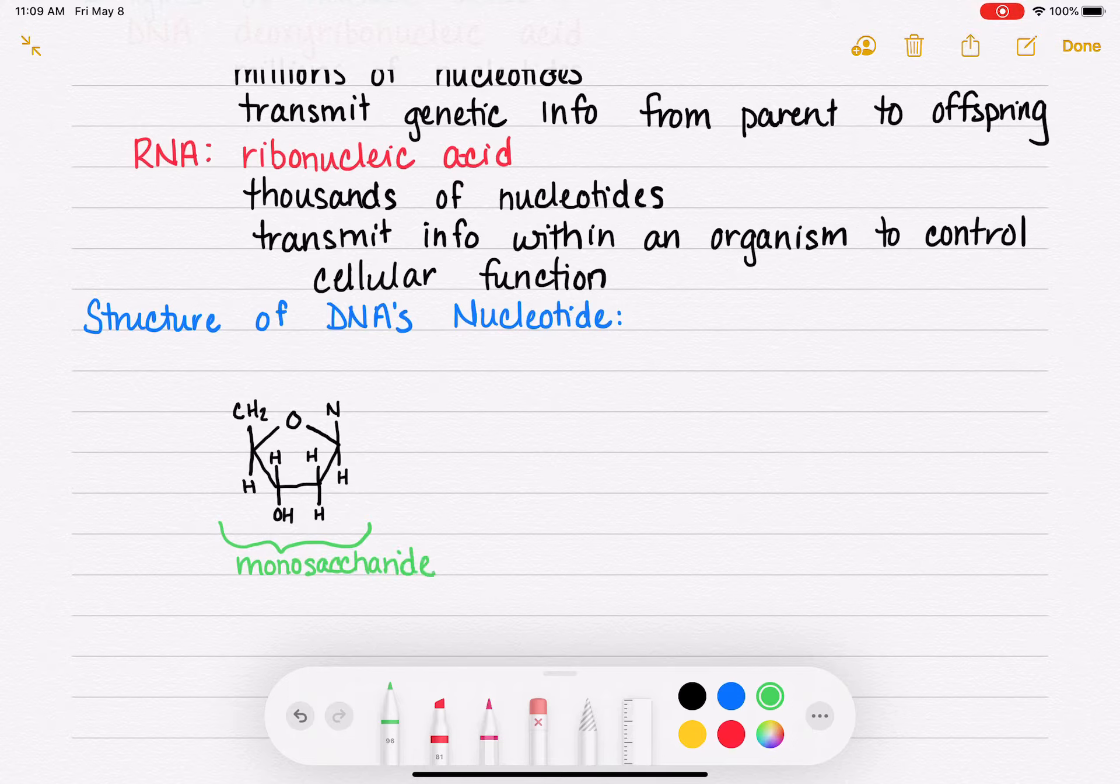This monosaccharide is called deoxyribose. It gets its name because the base name of this particular monosaccharide is ribose. But this particular sugar is missing an oxygen in that area right there that I just pointed at. So it gets the name deoxy because it's been deoxygenated at that one particular site.